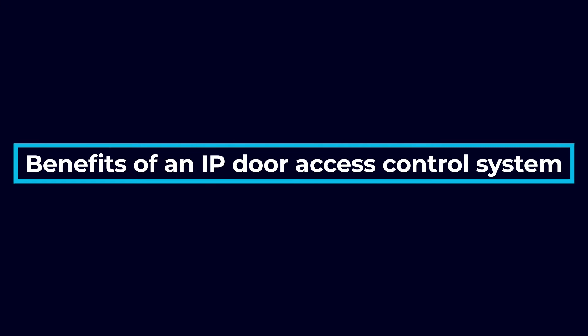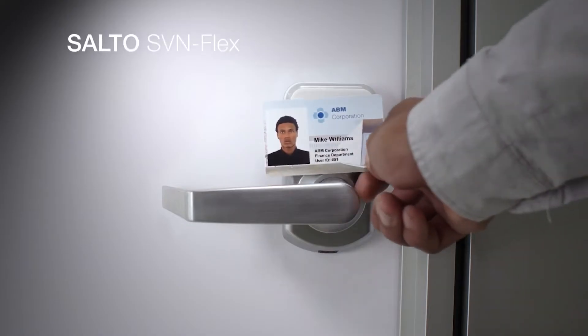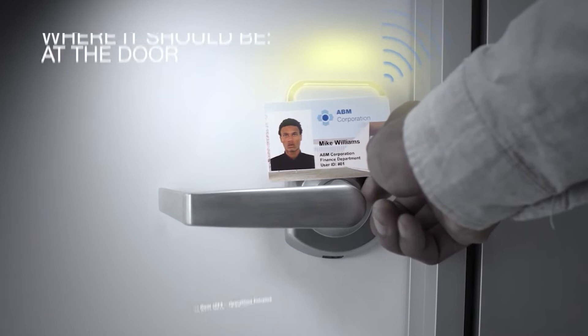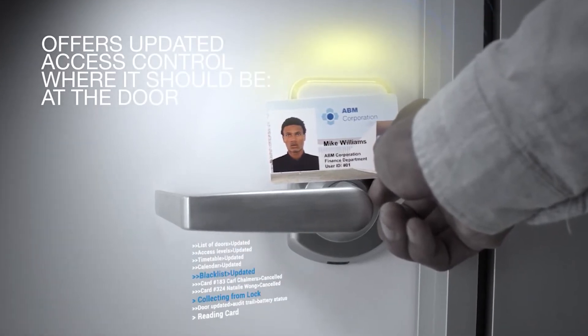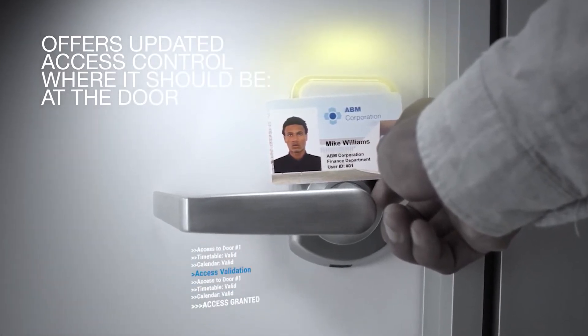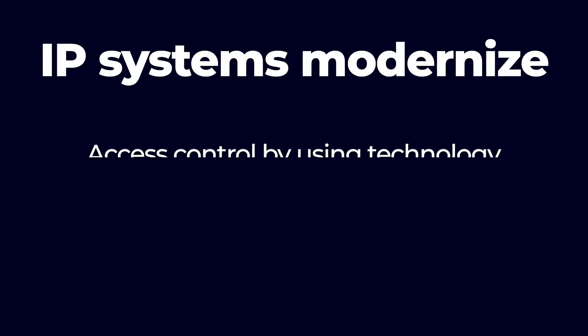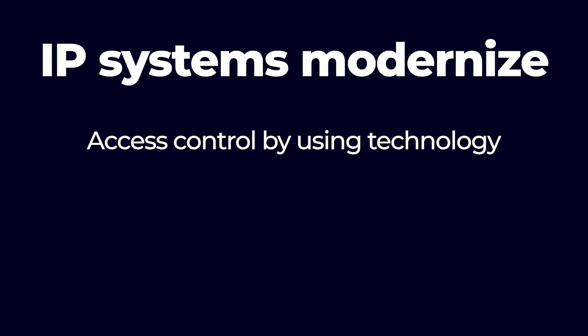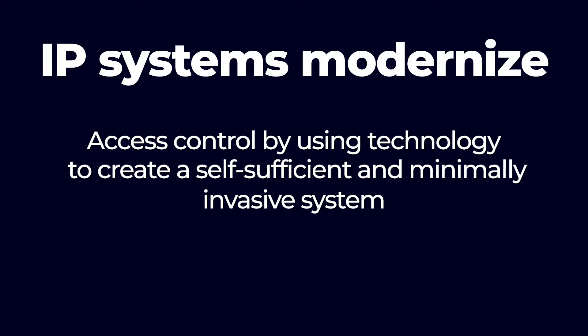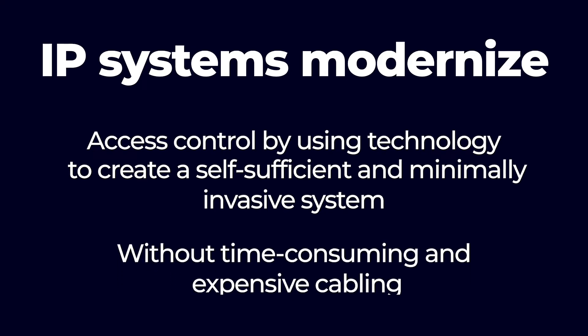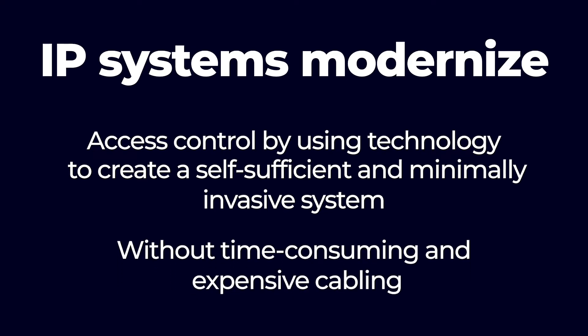Let's dive into some of the key benefits of an IP door access control system. If you're looking for an easy button when it comes to installing door access control, this is it. IP-based access controllers use your existing network infrastructure, eliminating the need to install new communication lines. IP systems modernize access control by using technology to create a self-sufficient and minimally invasive system without time-consuming and expensive cabling.